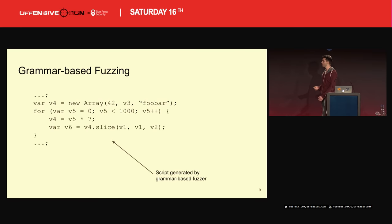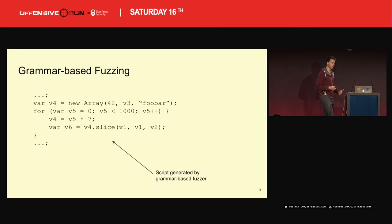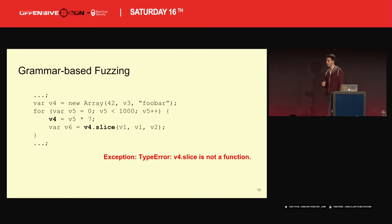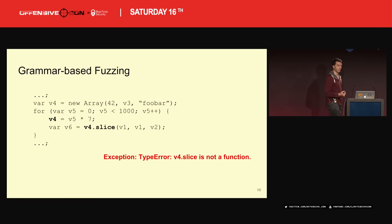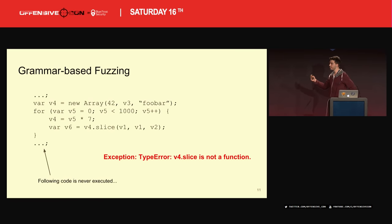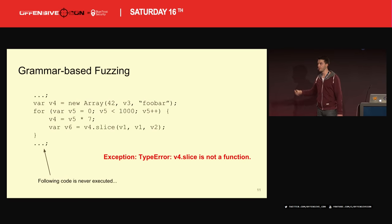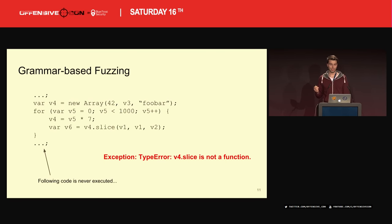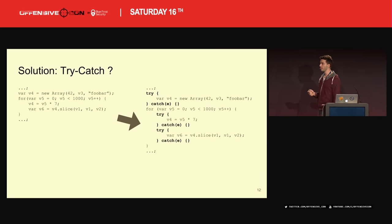So you could come up with something like this — this is what a generative grammar-based fuzzer can produce. The problem here is that in this particular sample, it's calling a method on something that's a number, which doesn't work. It's going to throw a runtime exception. And once the first runtime exception occurs, the code following that is never going to be executed. So it's not very helpful.